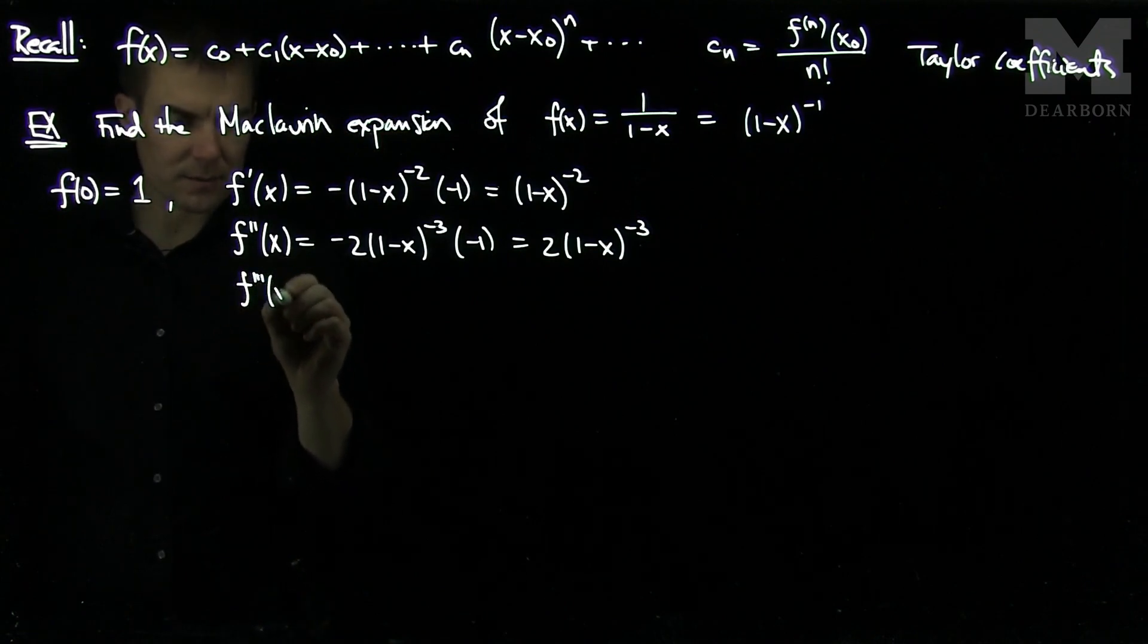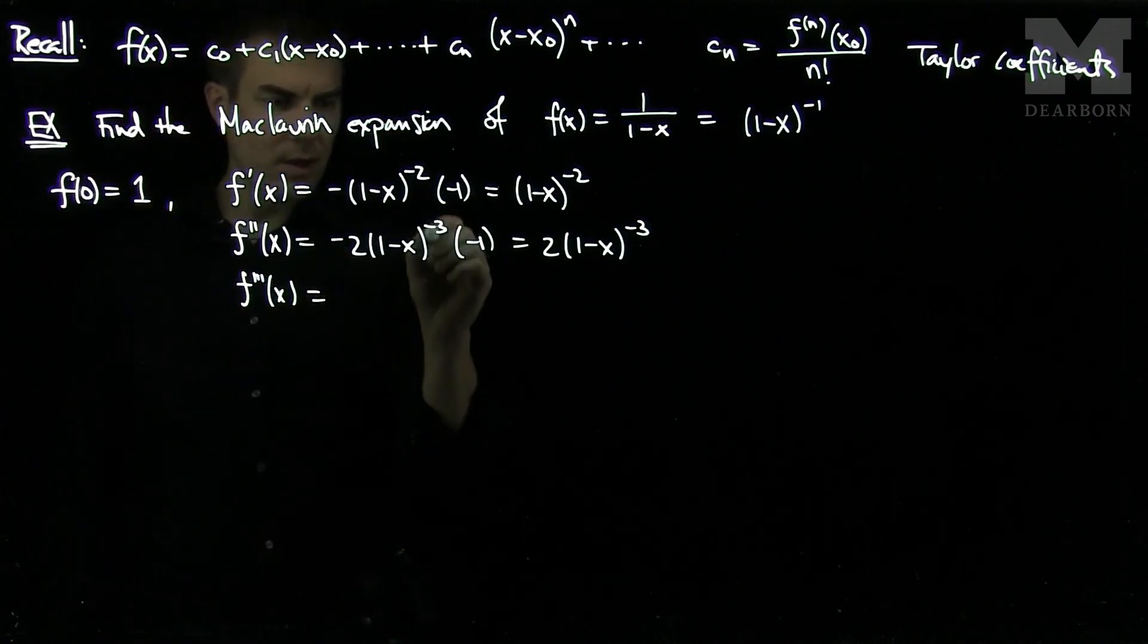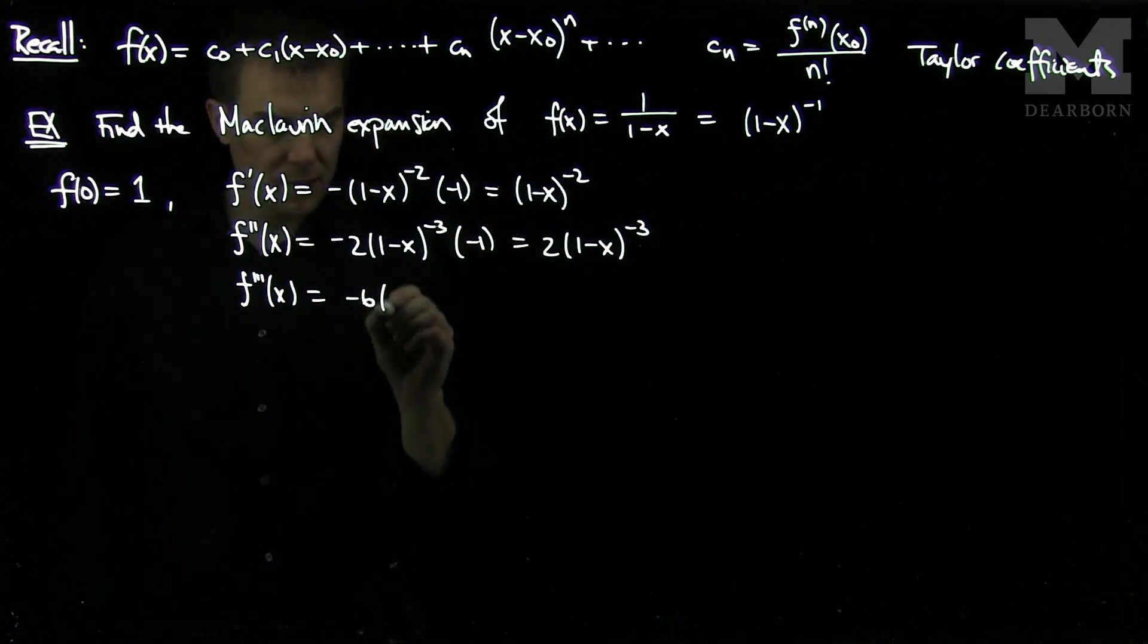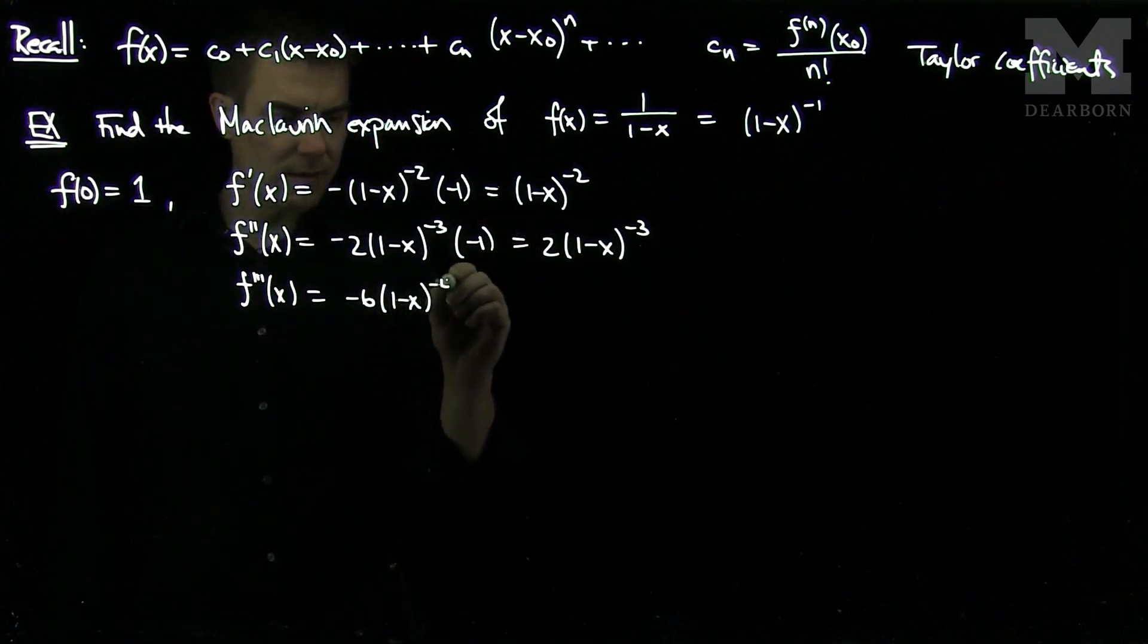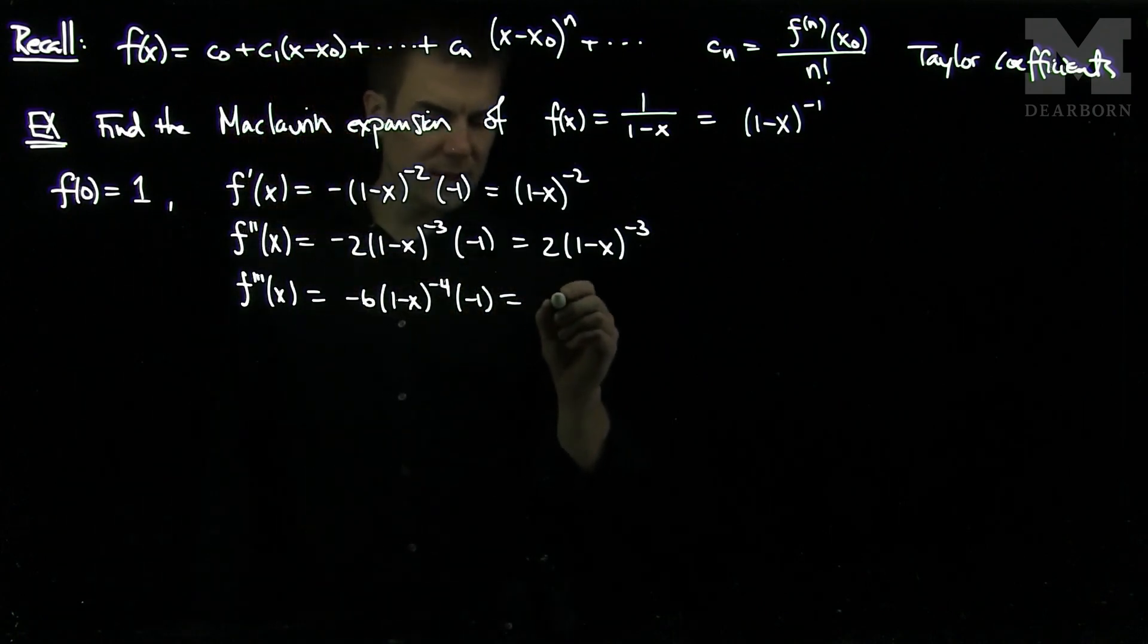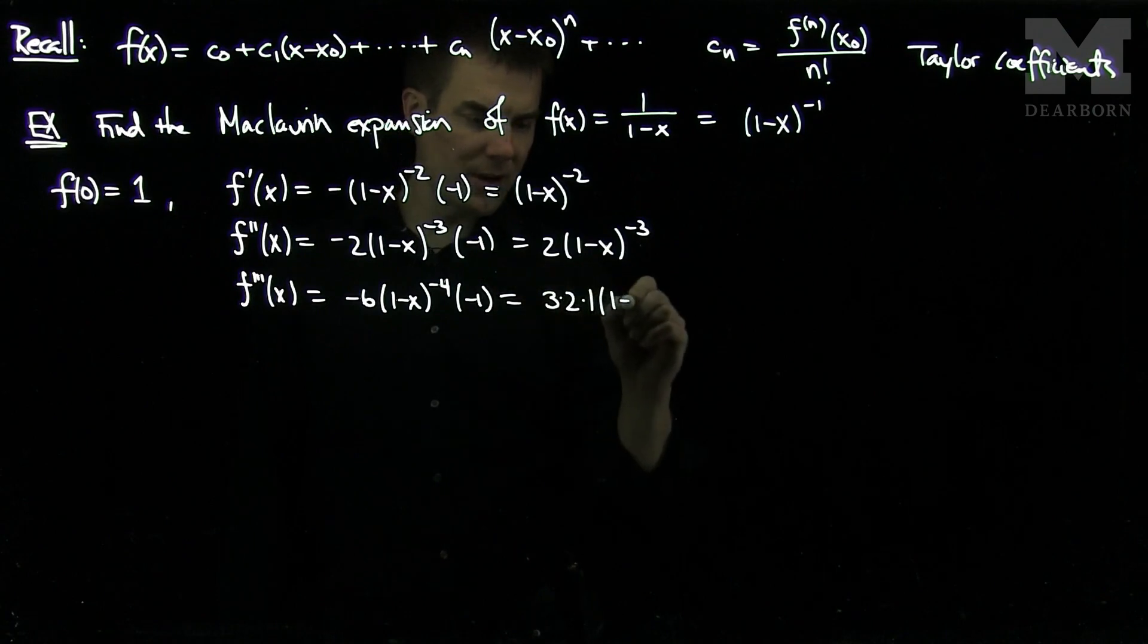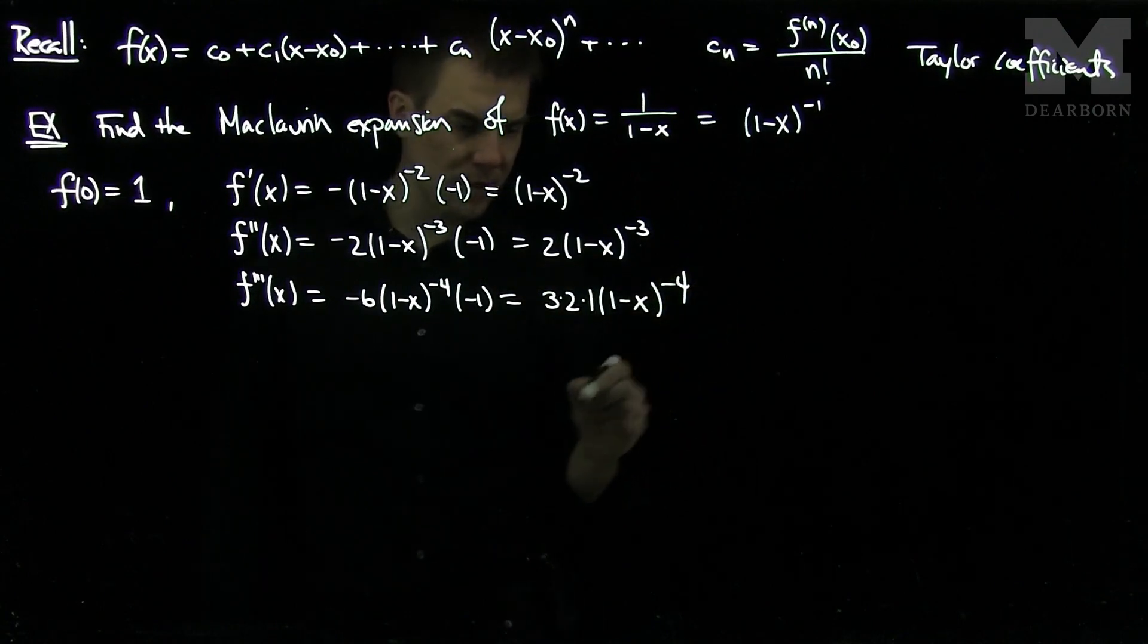f triple prime of x will be negative 3 times negative 3 times 2 is going to be negative 6 times (1 minus x) to the negative 4 times negative 1. So I'm going to write negative 6 as 3 times 2 and leave it as 3 times 2 and make it even simpler: 3 times 2 times 1 times (1 minus x) to the negative 4, so we can see the pattern.